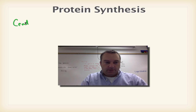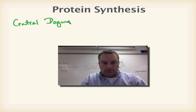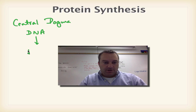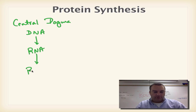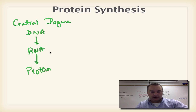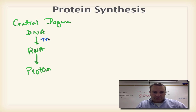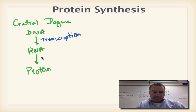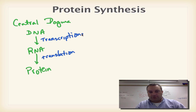Remember the central dogma. You start with DNA, then from DNA you get RNA, and from RNA you get protein. So DNA to RNA, RNA to protein. This first arrow represents a process called transcription, and the second arrow represents a process called translation. We've already gone through transcription — that's the process where you make RNA. Transcription in eukaryotes occurs in the nucleus.